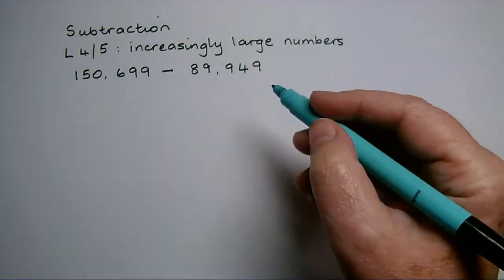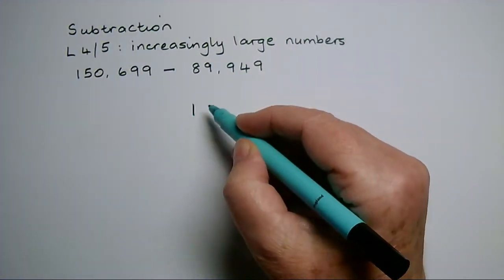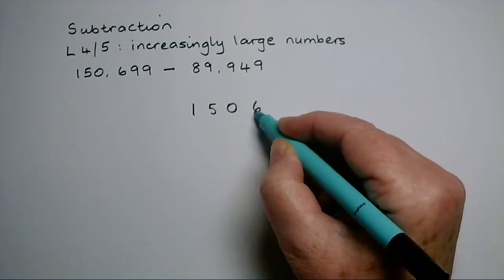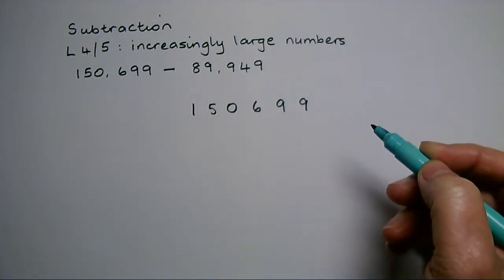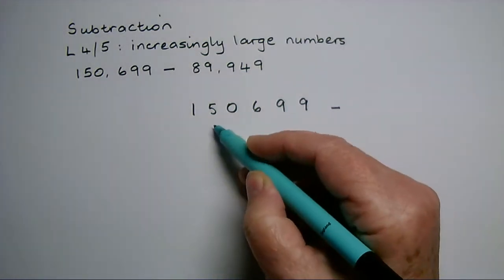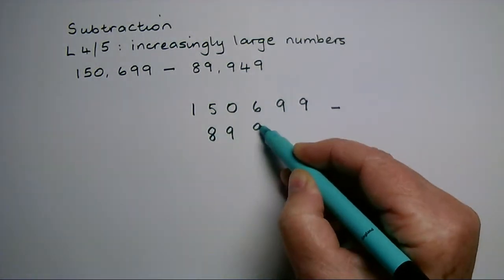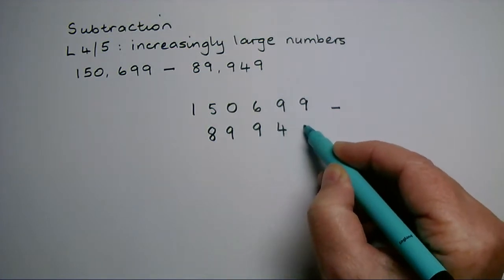I'm going to write these two numbers: 150,699, and underneath that I'm going to write the takeaway number: 89,949.